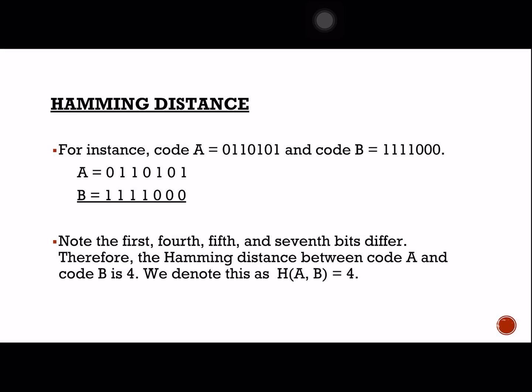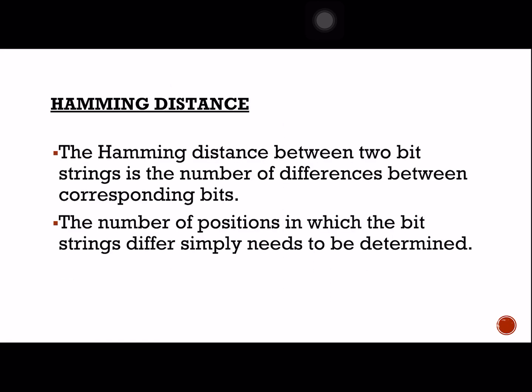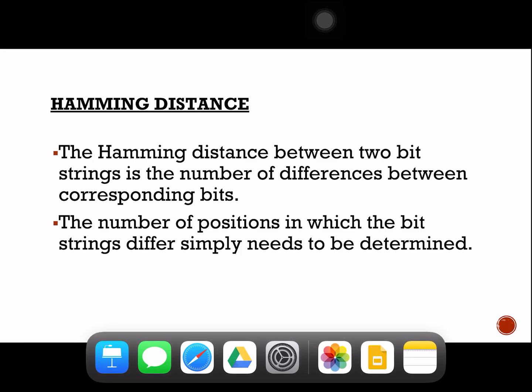Another method in coding theory is Hamming distance. The previous video discussed parity check, so this time let's cover Hamming distance. The definition of Hamming distance states that to find the Hamming distance of two bit strings, we just have to count the number of differences between corresponding bits.